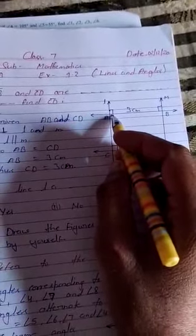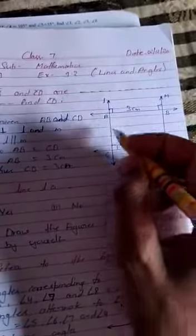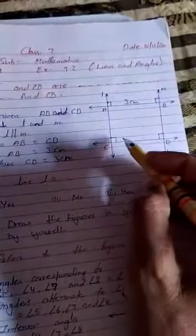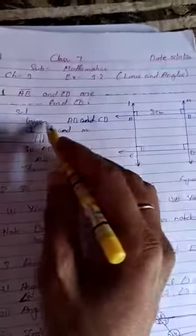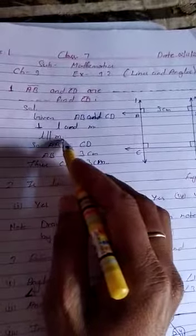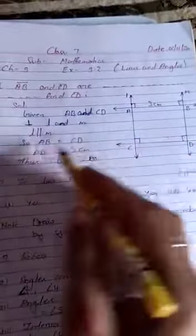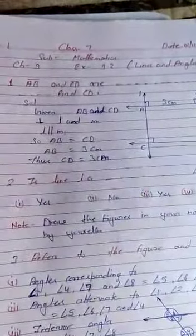क्योंकि यह perpendicular है — perpendicular का 90 degree का angle बन रहा है। Perpendicular होते हैं तो AB और CD जो हमारी lines हैं वह भी parallel हो जाएंगी। इस तरह से यह एक rectangle बन रहा है और rectangle में opposite side equal होती है। Given: AB and CD perpendicular to L and M, L parallel to M — so AB equal to CD. AB की length दी है 3 cm, so CD equal to 3 cm।